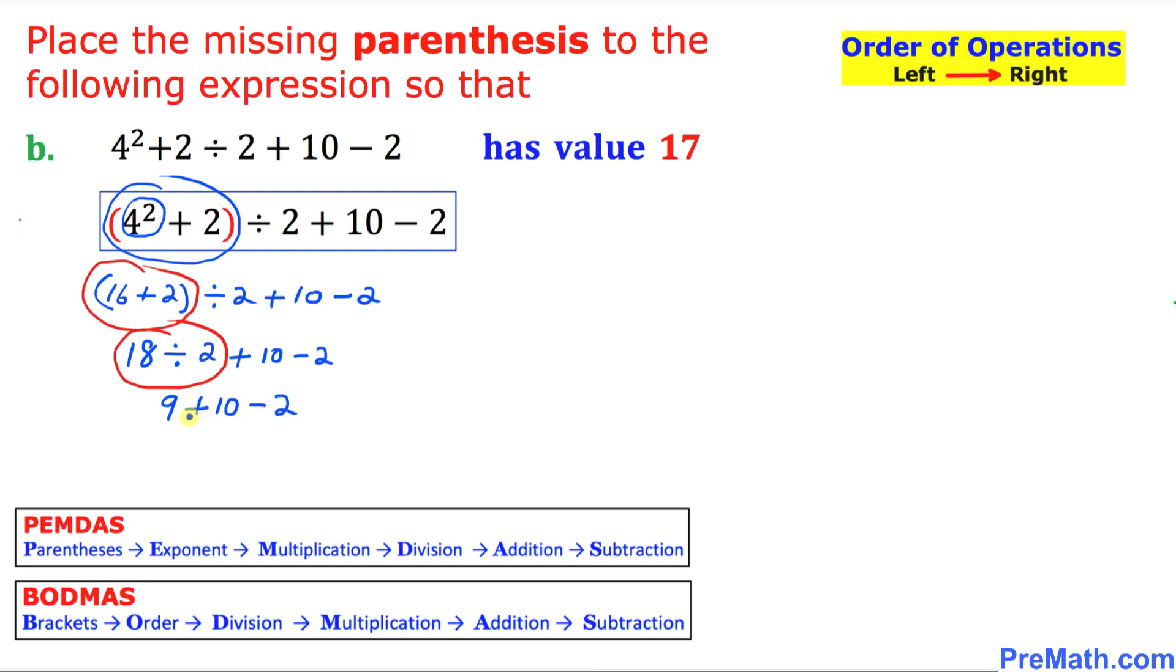Now we are going to add them first. 9 plus 10 is 19 minus 2 is 17. So that means we got the correct answer.